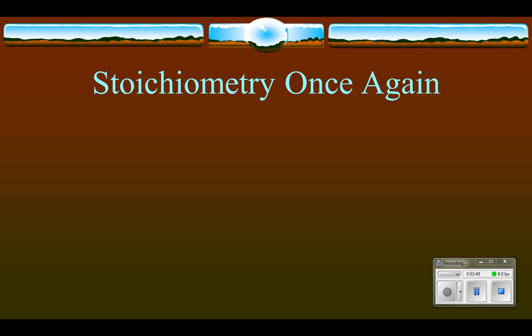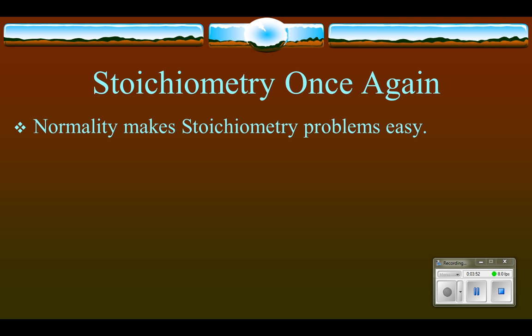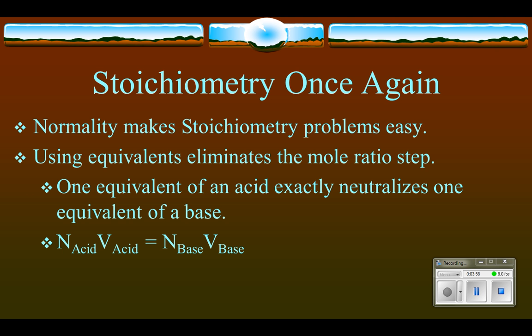Why would we need this new unit? It turns out that normality helps a lot with stoichiometry problems, making them much easier. Normality takes the mole-ratio step out of the problem, so instead of a four-step problem, you essentially have a two-step problem. You balance the equation, and then you know that one equivalent of an acid exactly neutralizes one equivalent of a base. We set up the simple equation: normality of the acid times volume of the acid equals normality of the base times volume of the base. As long as we know three of the four values, we can find the fourth.